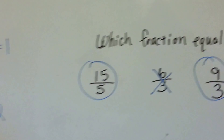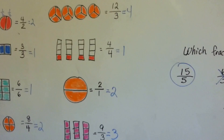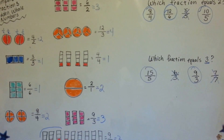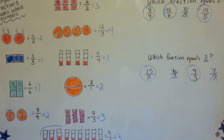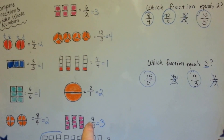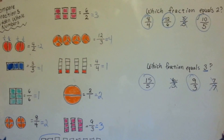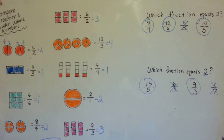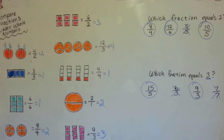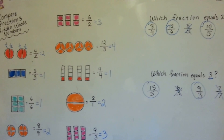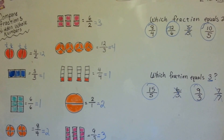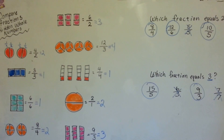So that's how a whole number can hide inside of a fraction — it's because the numerator is bigger than the denominator, and the denominator can fit into the numerator two times, three times, four times. Or if they're the same, it's equal to one whole. Keep up the good work, and I'll see you next video.